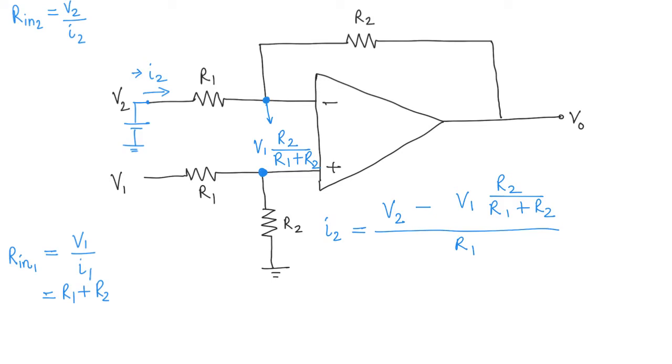Now we can find R_in2, which is V2 over I2. You can see that V2 over I2 is going to be dependent on V1 as well. We get R1 at the numerator and V2 minus V1*R2/(R1+R2) in the denominator. If we divide numerator and denominator by V2, we get R1 at the numerator and in the denominator we get 1 minus (V1/V2) times R2/(R1+R2).